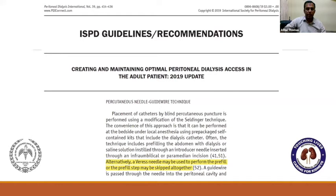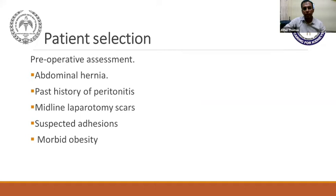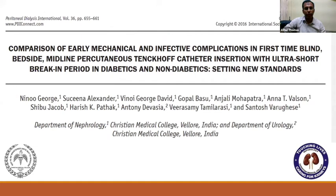Is the Veress needle recommended? ISPD guidelines state you can use an introducer needle, a 16 or 18 gauge needle, or alternatively a Veress needle. For patient selection, similar to other centers, we perform simultaneous abdominal hernia repair with PD catheter insertion, giving rest to the abdomen for four to six weeks before starting PD. Past history of peritonitis, midline laparotomy scars, suspected adhesions, and morbid obesity are absolute or relative contraindications to an open technique.